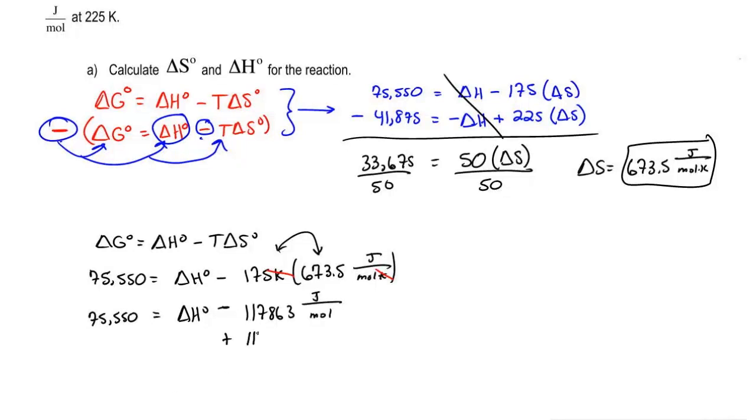We're going to add 117,863 to both sides. That's going to give us at the end delta H0 equals 1.93 times 10 to the 5 joules over moles.